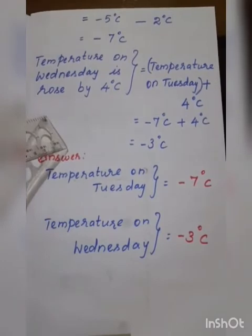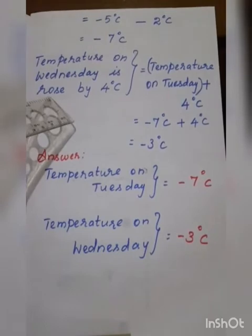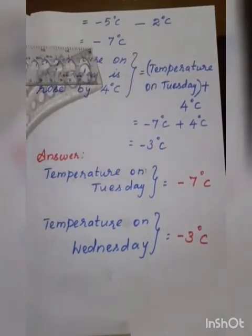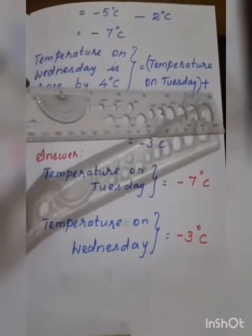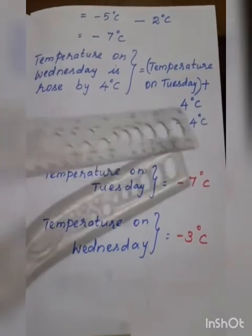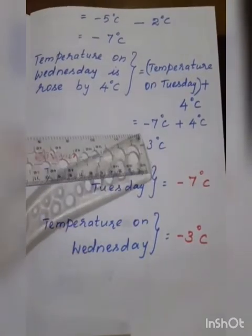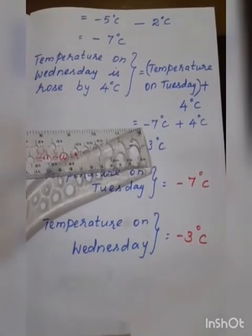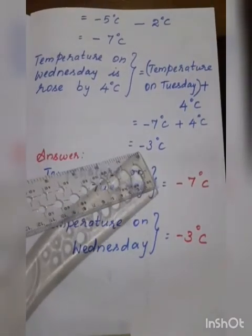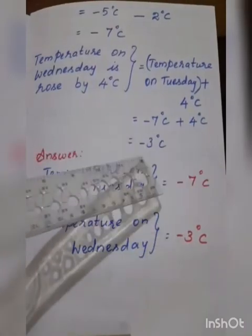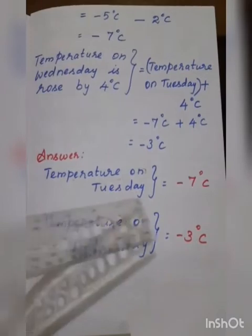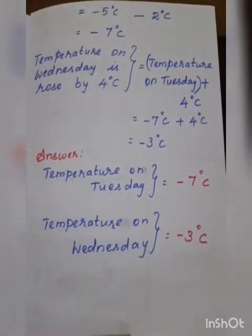The second question: the temperature on Wednesday rose — rose means increased — by 4 degrees Celsius. The temperature on Tuesday is minus 7 degrees Celsius, so add plus 4 degrees Celsius. We have one negative number and one positive number, so subtract the numbers and put the biggest integer's sign. 7 minus 4 is 3, and the biggest number's sign is minus, so minus 3 degrees Celsius. Temperature on Tuesday is minus 7 degrees Celsius and temperature on Wednesday is minus 3 degrees Celsius.